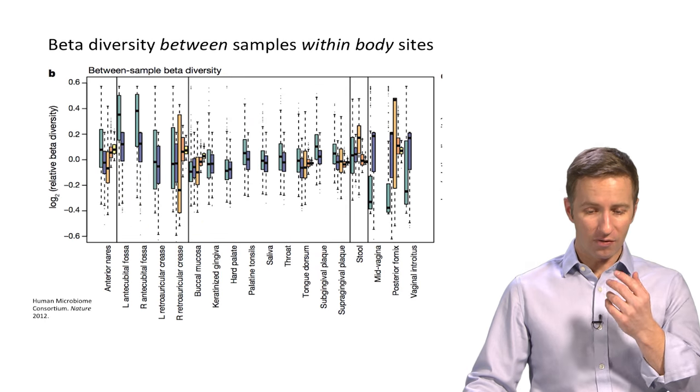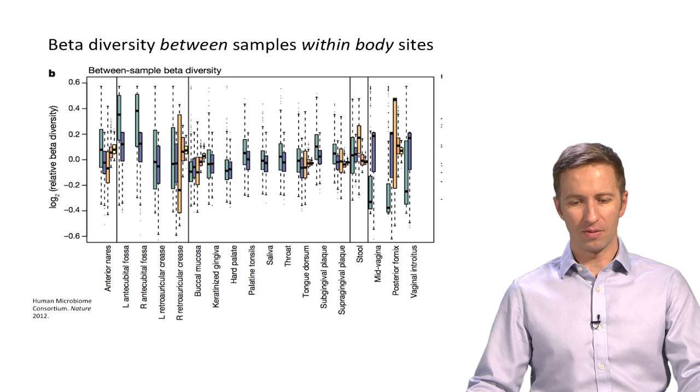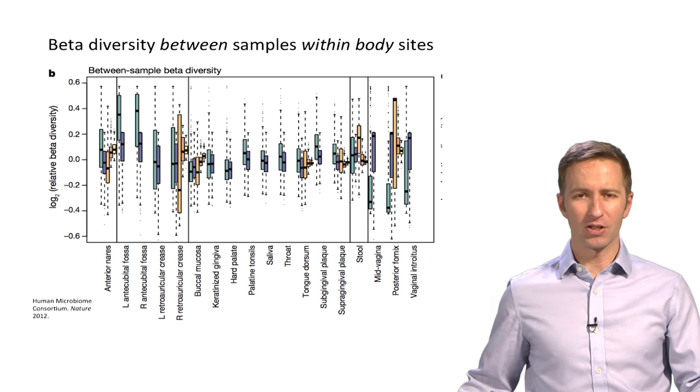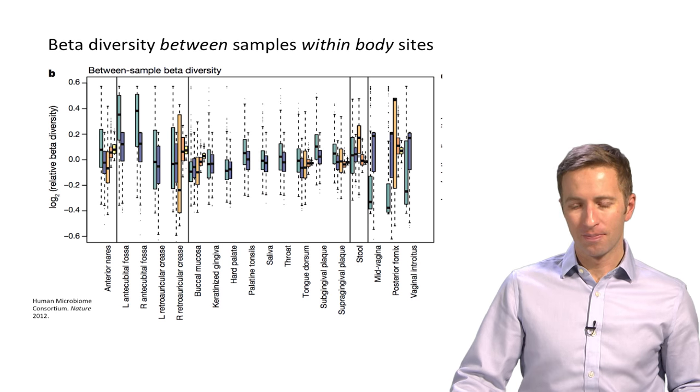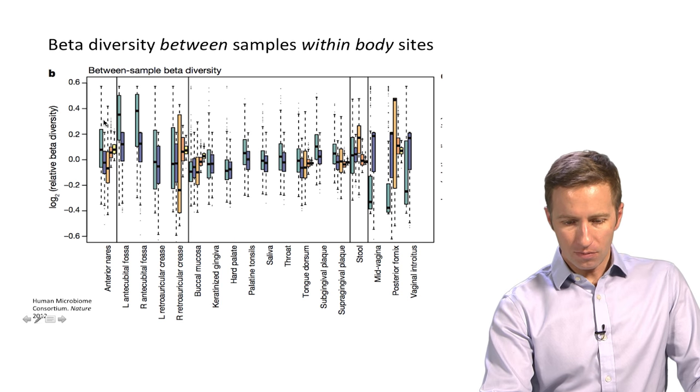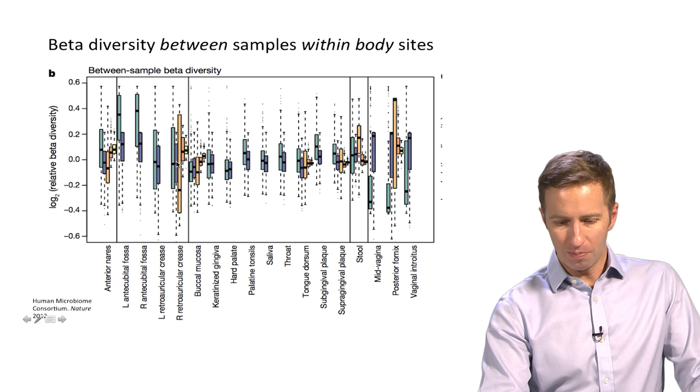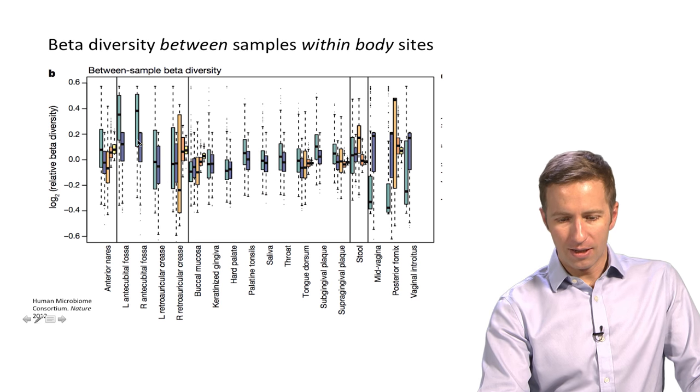There are a couple of other interesting figures in that paper that give you an example of how you can look at beta diversity. This is a plot of the beta diversity between samples within each body site. For example, there's more variability between samples on the skin.